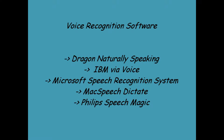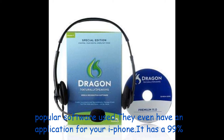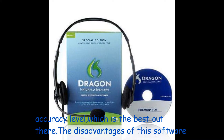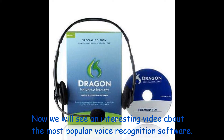The most popular voice recognition software programs are Dragon NaturallySpeaking, IBM Via Voice, Microsoft Speech Recognition System, MacSpeech Dictate, and Philips SpeechMagic. Dragon NaturallySpeaking appears to be the most popular software used — they even have an application for the iPhone. It has a 99% accuracy level, which is the best available. The disadvantages are that it is very expensive at about $200, and it uses a lot of computer memory. Now we will see an interesting video about the most popular voice recognition software.